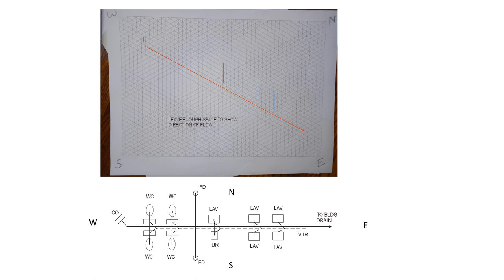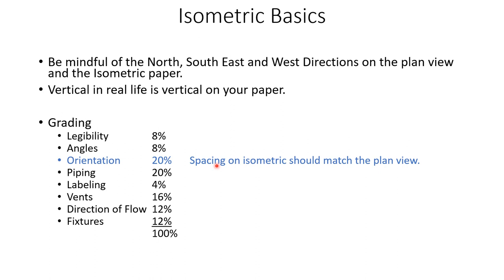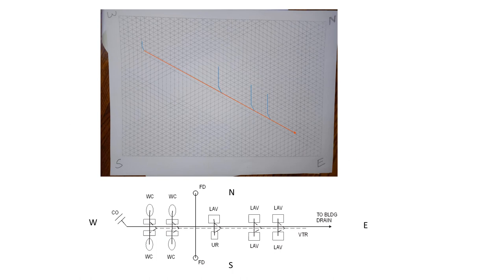The next thing we're going to look at is orientation. Your spacing on your isometric should match the plan view as far as your orientation is concerned. What do I mean? Well, let's take a look here.